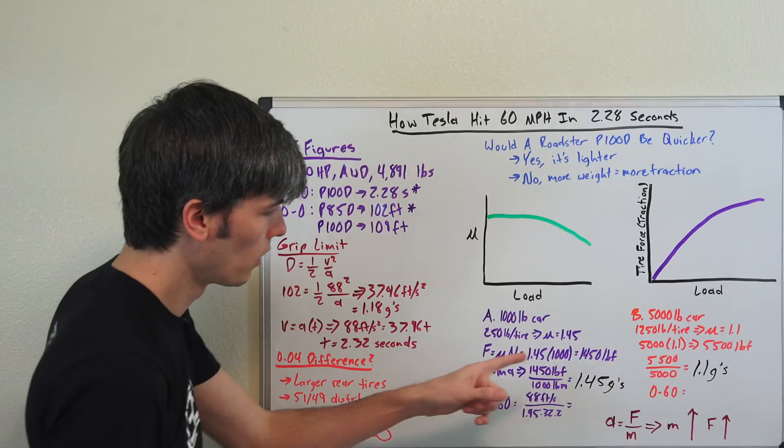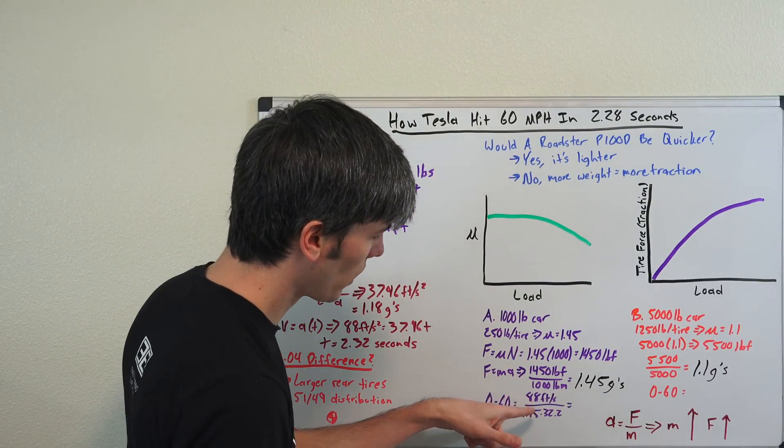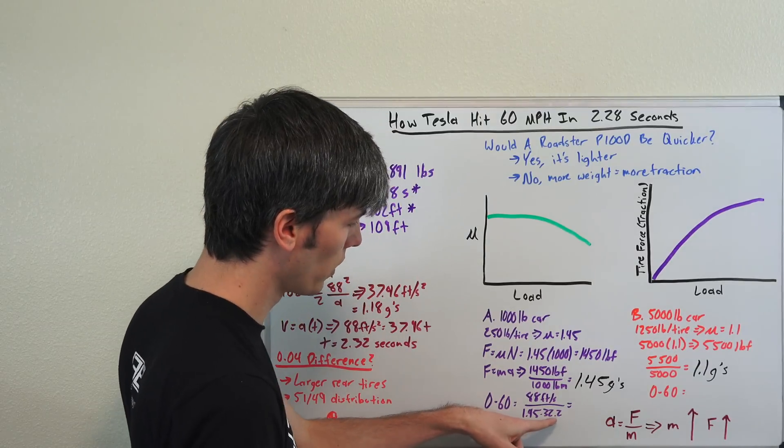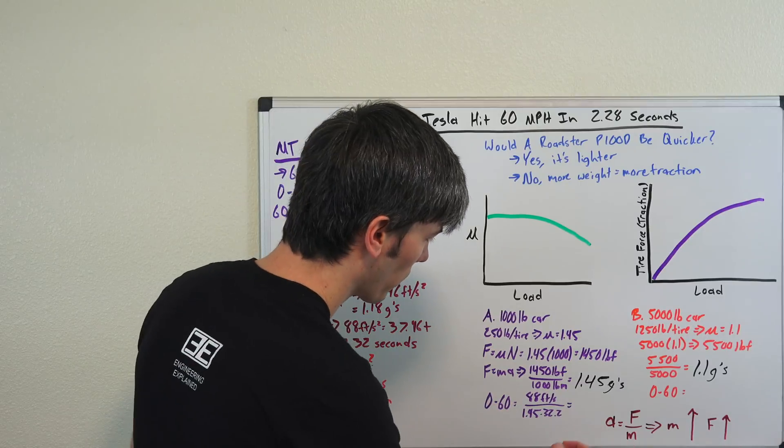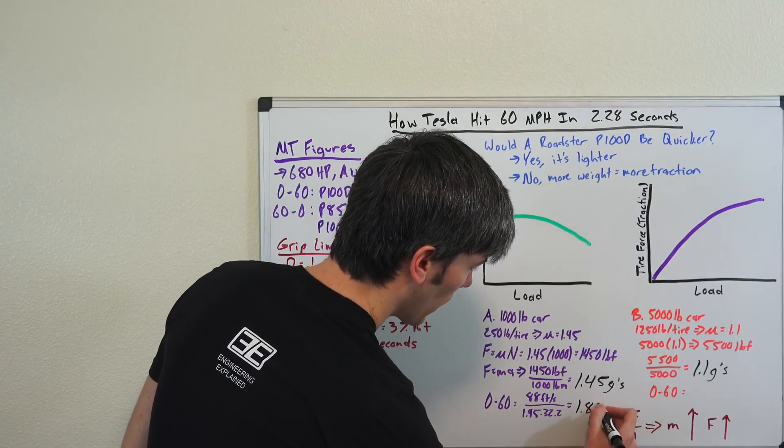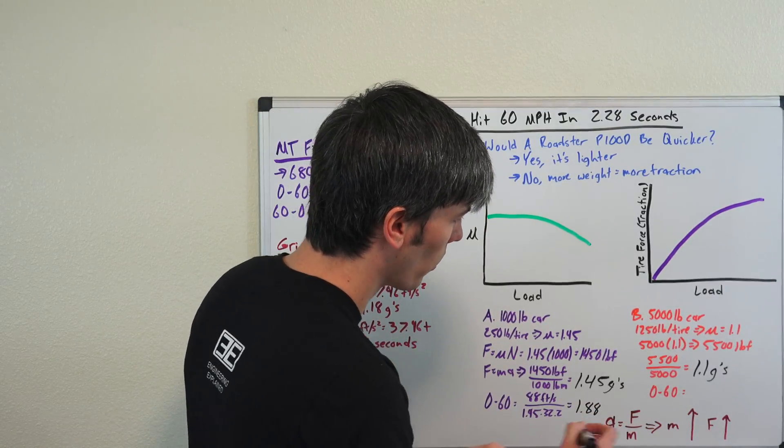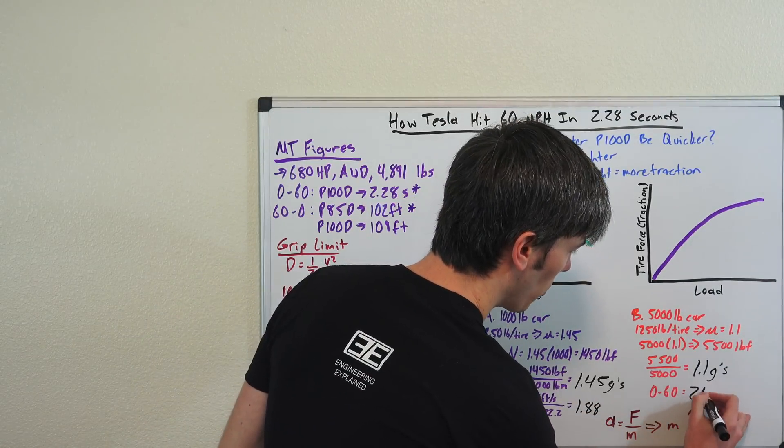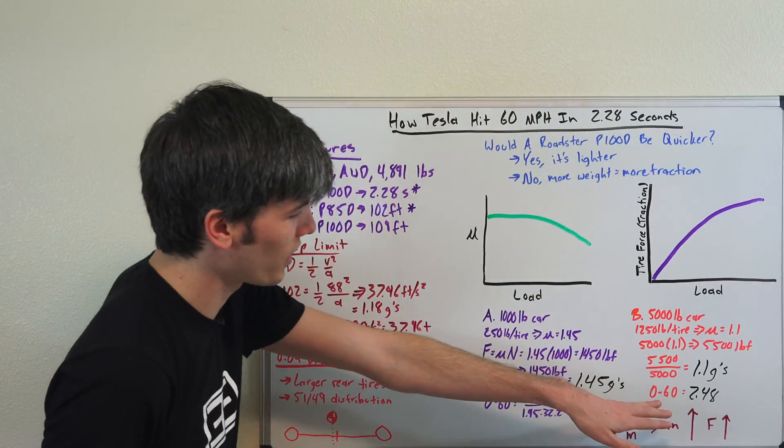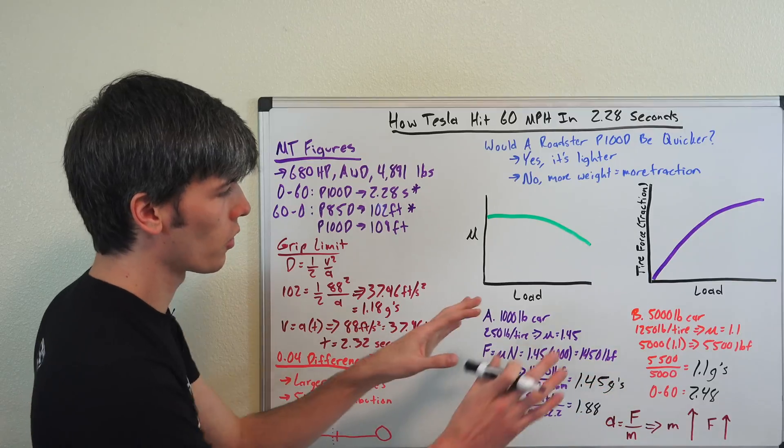So how fast will you get to 60 using an acceleration of 1.45 G's? You take 88, you divide that by 1.45 times 32.2. That's gravity in feet per second squared on planet Earth at sea level, and that is going to give us 1.88 seconds. You do the same for 1.1 G's and that's going to give you 2.48 seconds. And so you can see there's a 0.6 difference here in time purely from weight.